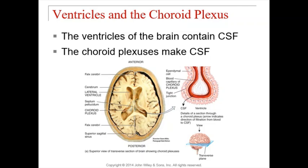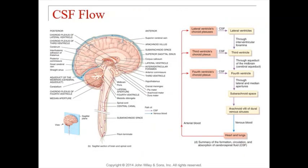Once the CSF is made, it circulates in and around the brain. Your brain has four major ventricles: two lateral ventricles (one for each cerebral hemisphere), a third ventricle, and a fourth ventricle. All four ventricles have choroid plexuses to make cerebrospinal fluid. To track the flow, we begin in the lateral ventricles.